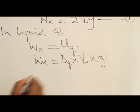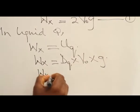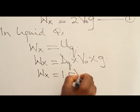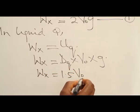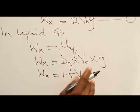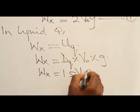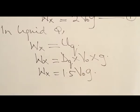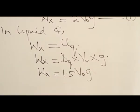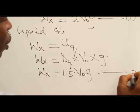So, this will give me 1.5 times volume of object or volume of liquid displaced times acceleration due to gravity. I'll call this equation 2.